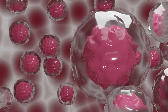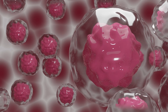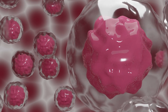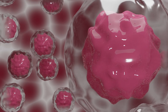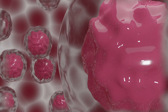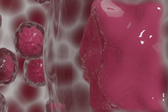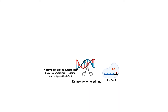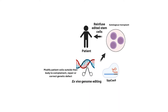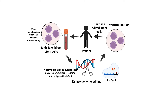These stem cells, in the case of the blood system, give rise to all types of blood cells — red blood cells, T cells, B cells, all of those things. And so if you can modify the stem cells and return them to the patient, in principle they can restore any component of the blood system that's defective.